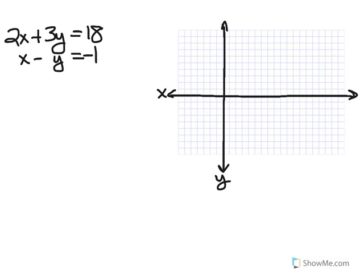All we need to graph lines is two points. The best two points to have at any time are the x-intercept and the y-intercept. We can get those quickly from these two equations using these formulas.